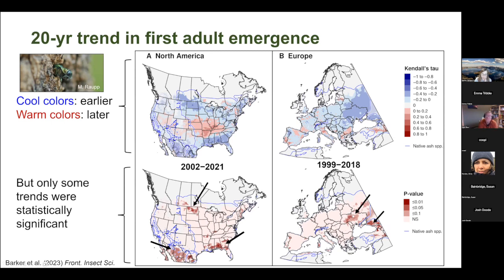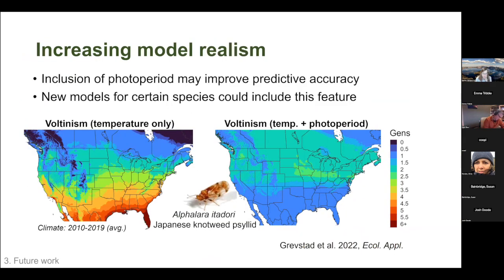Future work focuses on increasing model realism. One area is incorporating photoperiod into species models, which can improve predictive accuracy for insects with photoperiod-cued diapause. As an example, voltinism maps for the Japanese knotweed psyllid Aphalara itadori show that a temperature-only model greatly overestimates generations per year compared to a model that includes photoperiod-cued diapause. As we develop new models, we can include this photoperiod response.